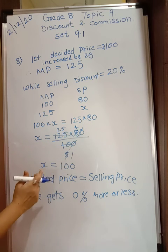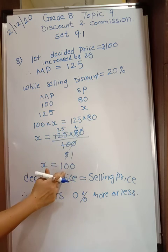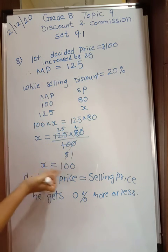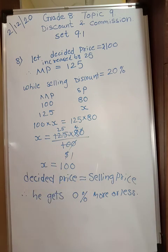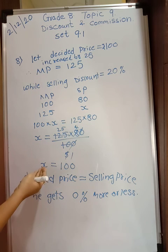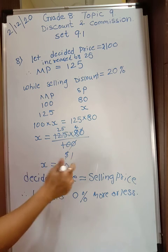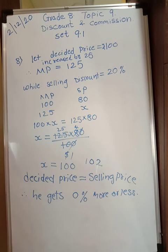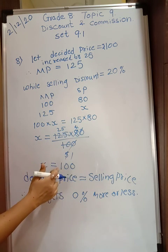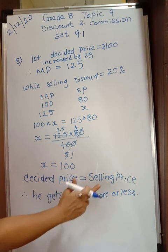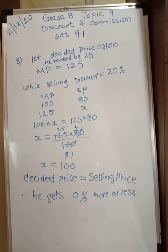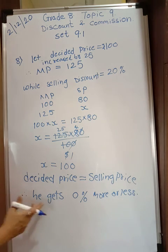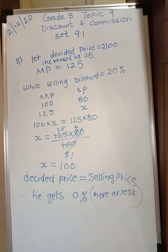So x equals 125 into 80 upon 100. After cancellation, x equals 100. So the selling price is 100 rupees — the same as the decided price. The question asks how many percent more or less he gets on the decided price. Since decided price and selling price are both 100, he gets zero percent — neither a gain nor a loss. Thank you students.